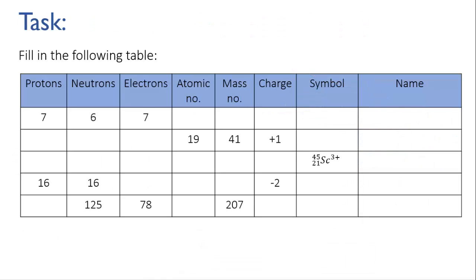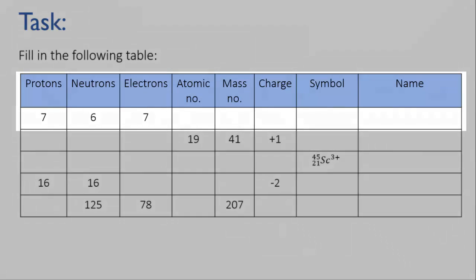Here's your task for now. I'd like you to fill in the following table. I'm going to do the first one for you just to get you started. So we need to do this by deduction. We've got 7 protons. We know that the atomic number is the same as that. So that's going to be number 7. The mass number is the protons plus the neutrons. That's 7 plus 6, which is 13.